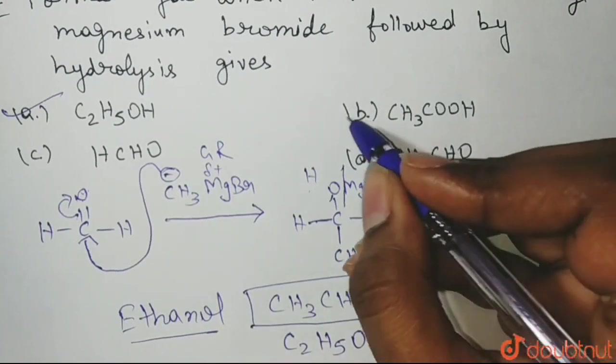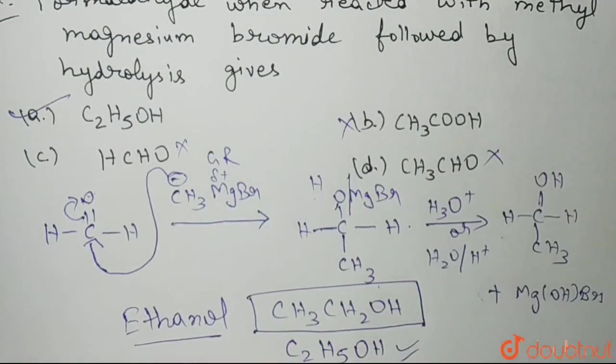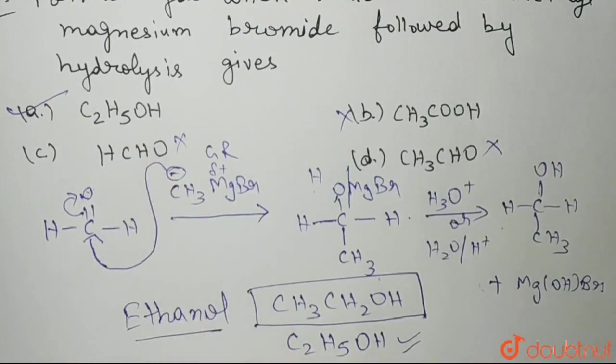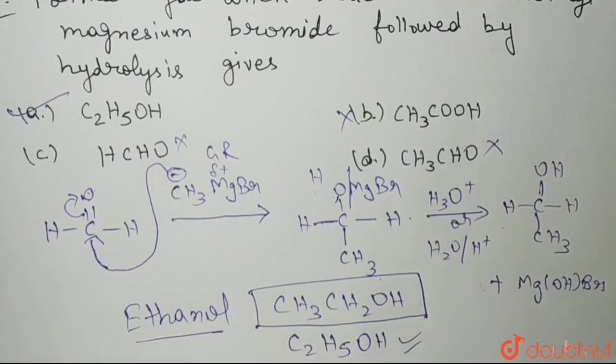The rest are incorrect because this is not forming, this is also not forming, and this is also not forming as the product. So the correct answer is C2H5OH, that is ethanol. I hope you understood. Thank you so much.